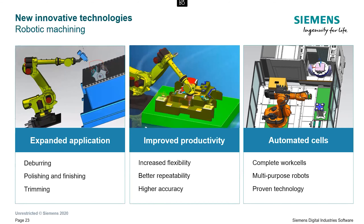You can access manufacturing planning data directly from the shop floor by connecting PLM to production systems. By connecting Teamcenter and the shop floor, we can send machining data and tool list information directly to CNC machines.